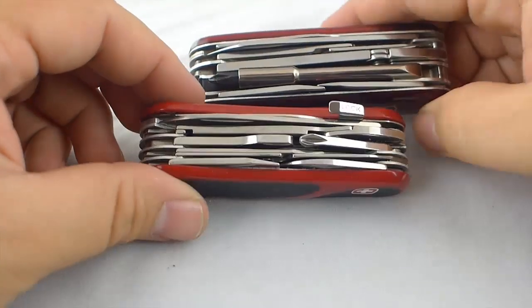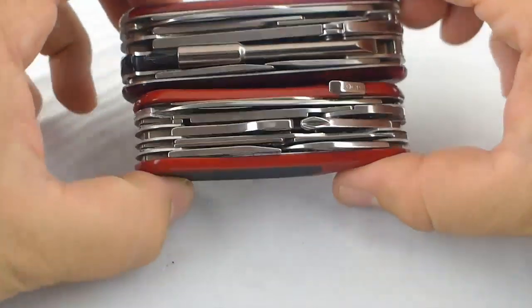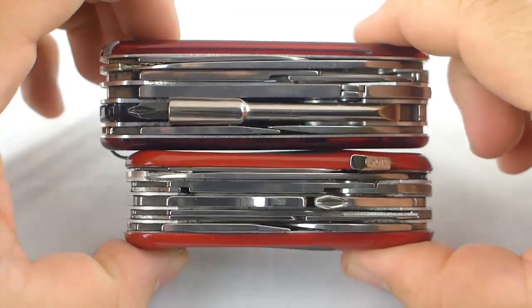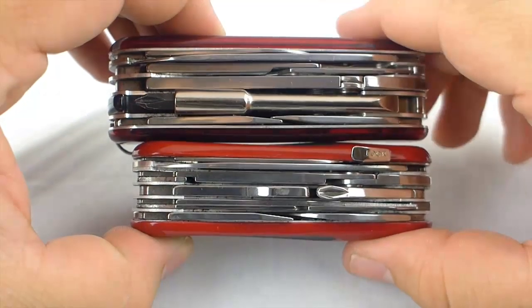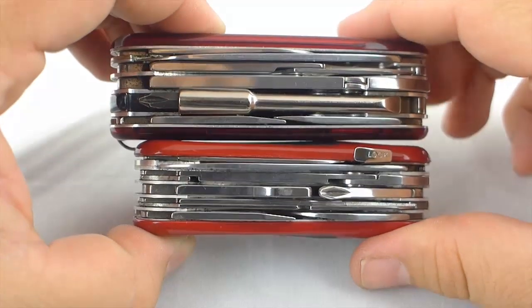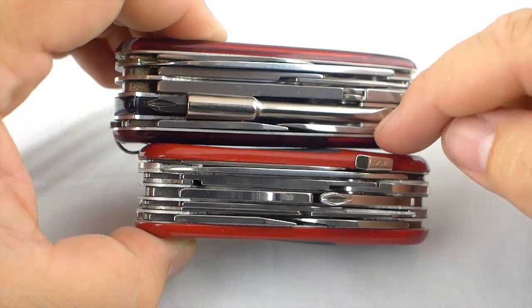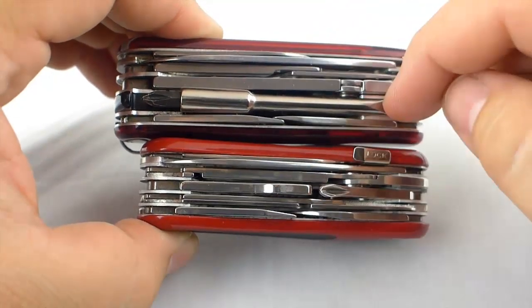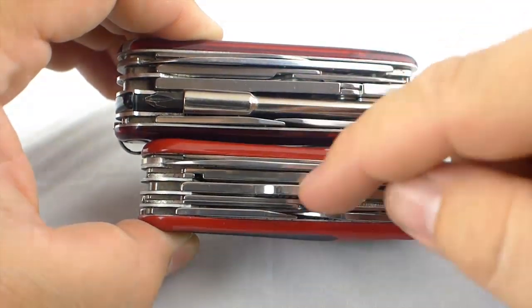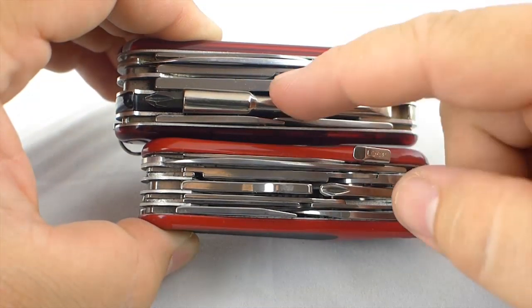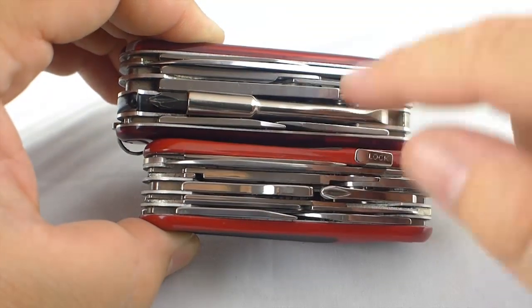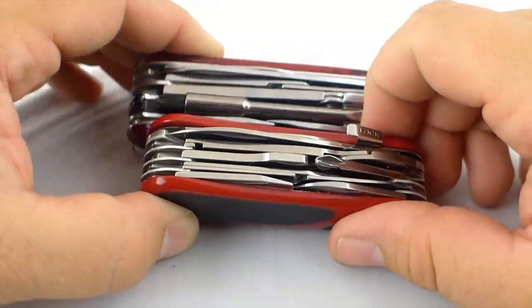The closest knife I actually own to that is going to be the Cybertool 34. A slightly wider and heavier knife. This bit driver here makes it heavier. But other than that, it's got all the same tools. It's got two blades instead of the nail file. But all the same tools in each row. Except that the bit driver goes the whole length instead of having this wrench here.